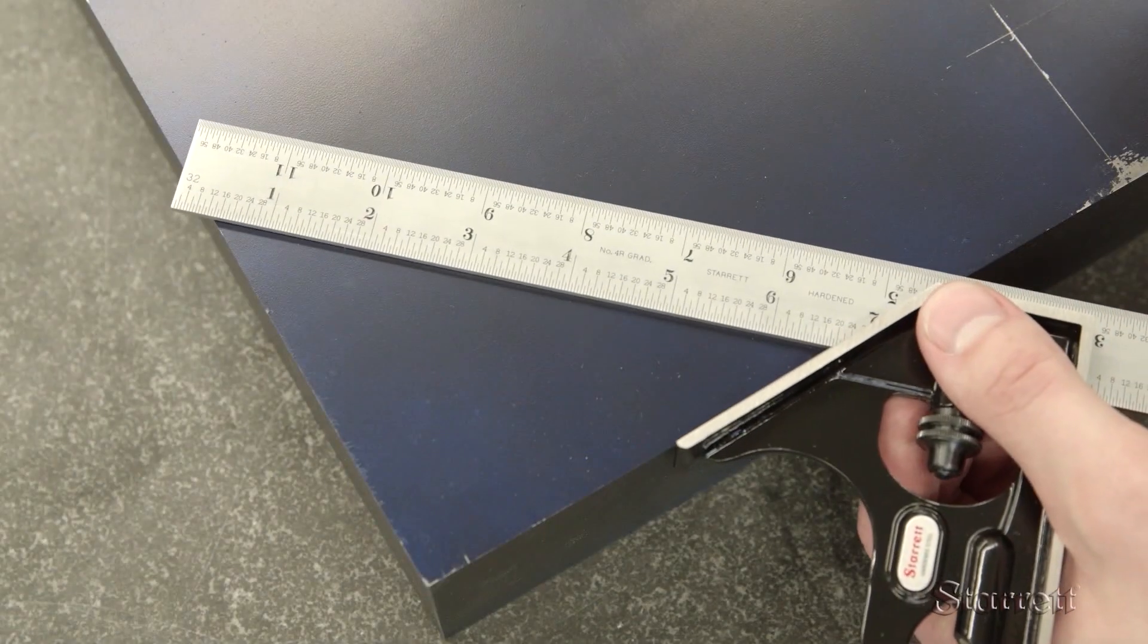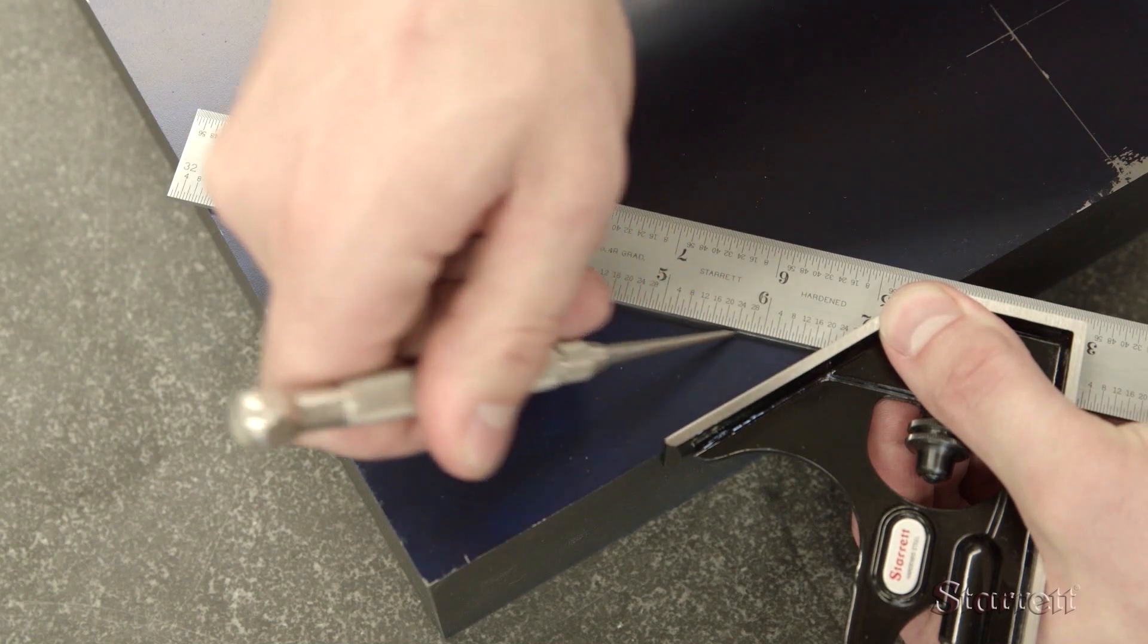Using the angled side of the head, you can scribe a line that is exactly 45 degrees from the edge.